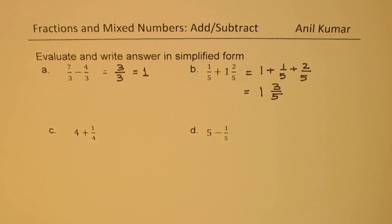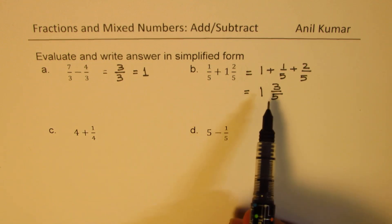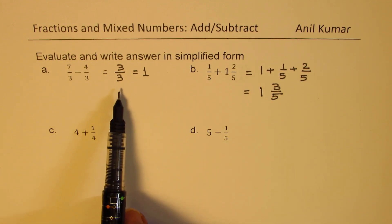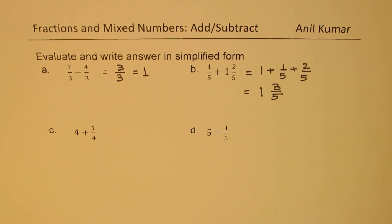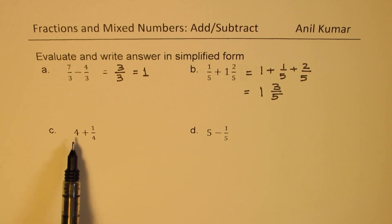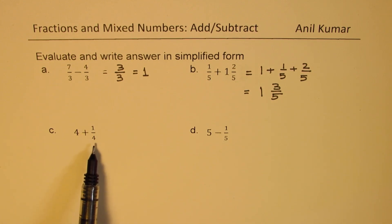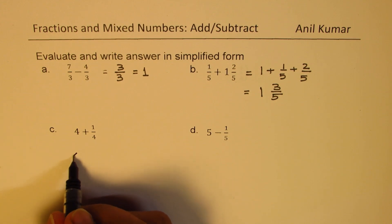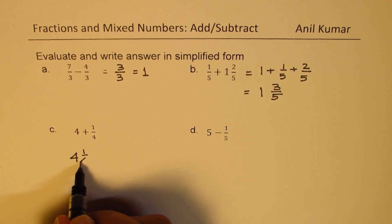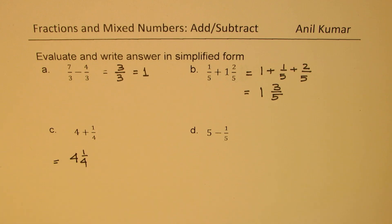So if the bases are the same, it is a very simple process. You never change the denominator — it always remains the same. The numerator gets added or subtracted. The next example is 4 plus 1 over 4 — 4 whole numbers — so you could directly write this as 4 and 1 over 4 as your answer.